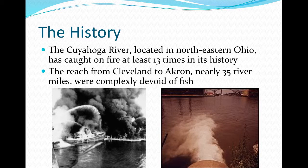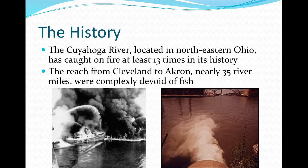This burning river helped establish the Environmental Protection Agency and helped pass the Clean Water Act. Although dramatic improvements have been made to the quality of the Cuyahoga River, it is still considered polluted due to large amounts of urban runoff, non-point source pollution, combined sewer overflows, and stagnation of water due to impoundment by dams. The EPA classified portions of the Cuyahoga River watershed as one of the 43 Great Lakes areas of concern.